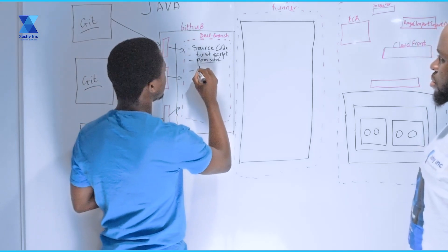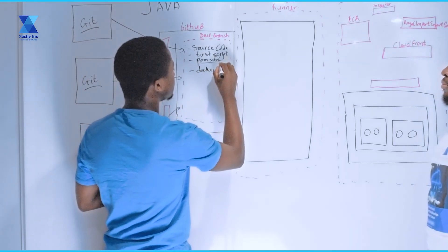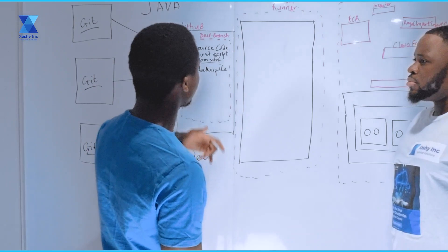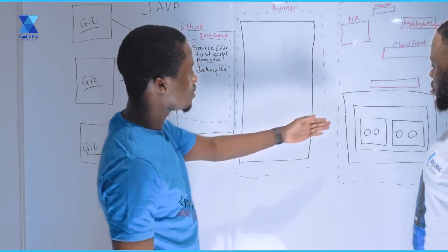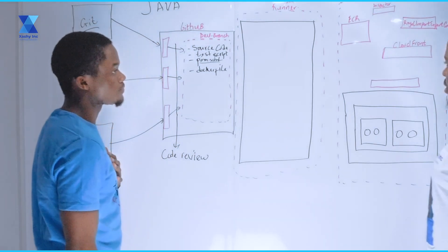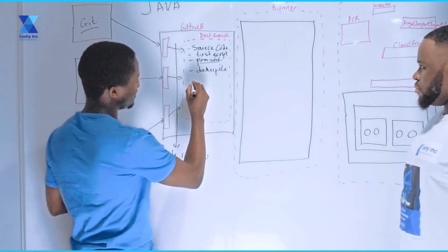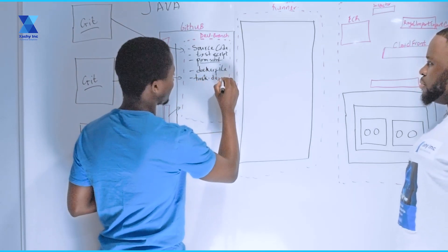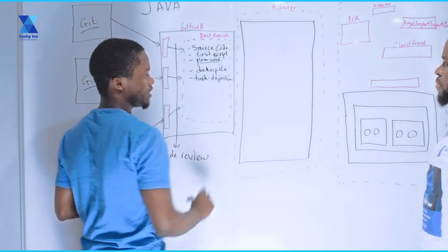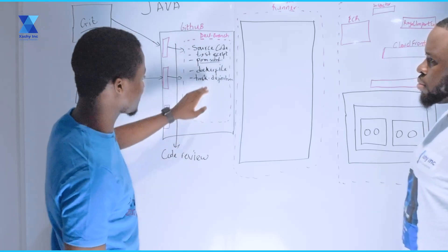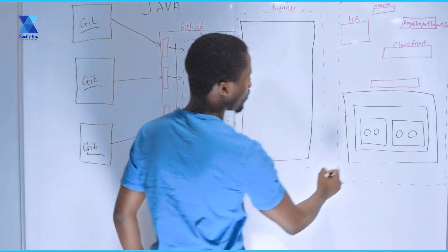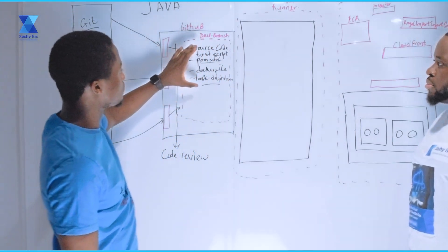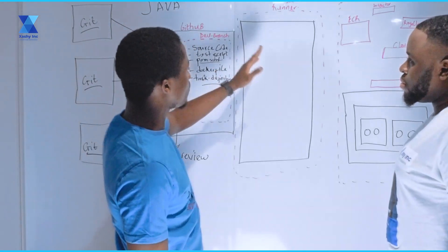Then as the engineer, there are some other files I had to provide. For example, I had to provide the Dockerfile. Like I said, this application has to be containerized, so I had to come up with a Dockerfile because we're going to be using Docker to containerize this application before deploying it onto our ECS environment. I also had to have a task definition — the task definition JSON file. This is a requirement when we want to deploy onto our ECS environment. So these are the files that are expected to be in our repository before we can kickstart the process.